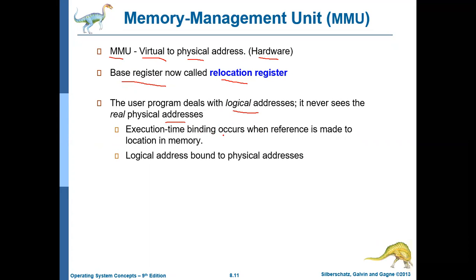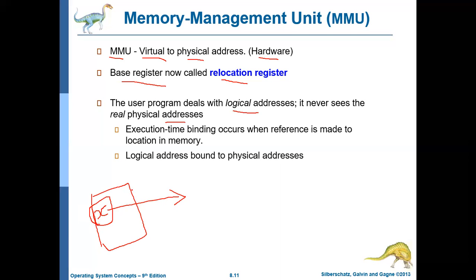Execution time binding occurs when reference is made to the location in memory at runtime. For example, say your program is referring to a variable X — where X is, what the corresponding memory location will be, that will be decided only at runtime. That is called execution time binding. The logical address will be bound to physical address only during runtime.